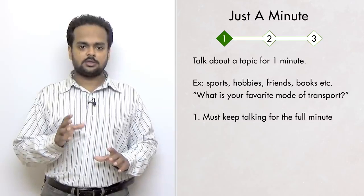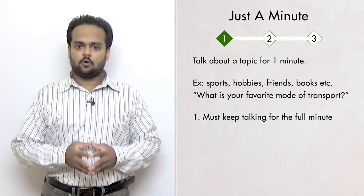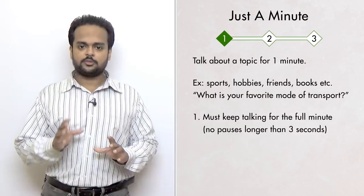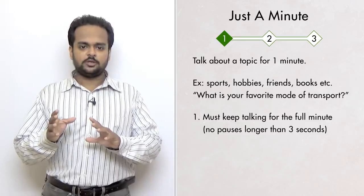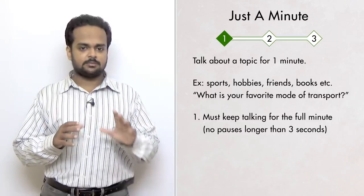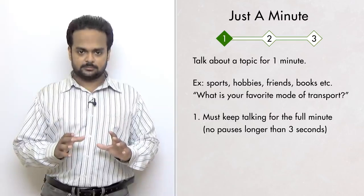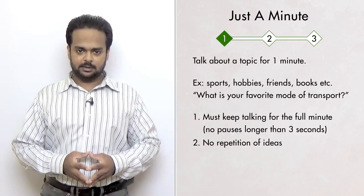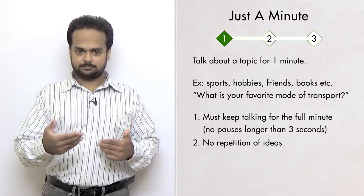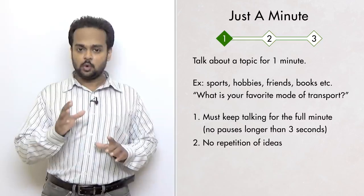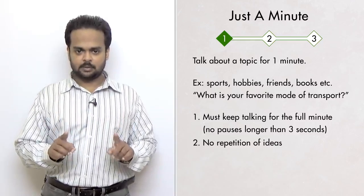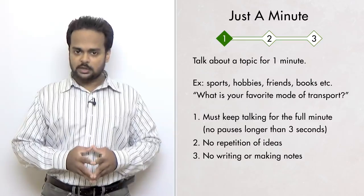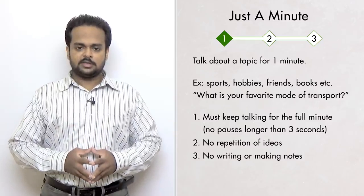The first rule is that you cannot stop speaking. You must talk for the full minute. If you have to pause to catch your breath, it's okay. But you cannot pause for more than three seconds. Even if you say nonsense or you say something unrelated to the topic, it doesn't matter. You're just going to keep talking. So that's rule number one. Rule number two is you cannot repeat the same ideas. That means you can't just say the same things over and over again. This isn't pronunciation practice, it's fluency development. So no repetition of the same ideas. And rule number three is no writing. You cannot make any notes while you are speaking. You must only concentrate on speaking. These are just the three rules.